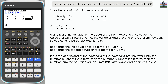Quickly double-check everything is OK and press execute. Here we have the solution: x is negative 3 and y is 0.5, or one half. Now we're going to go into a different location to solve the linear and quadratic simultaneous equation.